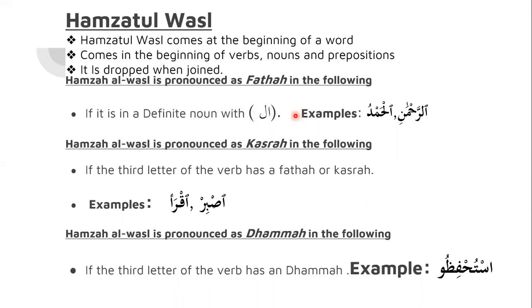In some cases you will see Hamzatul Wasal come as part of the definite article Al, and in some cases it will not come with Al — it will just come as an independent letter that stands alone. If that happens you have two conditions, and you need to look at the third letter and the vowel of the third letter. If the third letter has a Kasra, you will place a Kasra on Hamzatul Wasal.